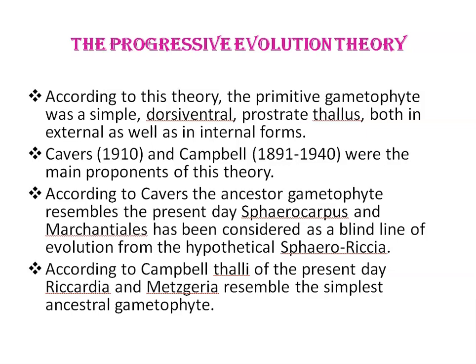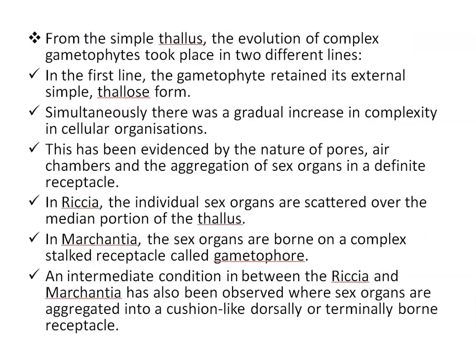According to Cavers, the ancestral gametophyte resembles the present-day Sphaerocarpus and Marchantia, and has been considered as a blind line of evolution from the hypothetical ancestor. According to Campbell, the present-day Riccia and Metzgeria resemble the simplest ancestral gametophyte. From the simple thallus, the evolution of complex gametophyte took place in two different lines. In the first line, the gametophyte retained its external simple thallus form as found in Marchantiales, and simultaneously there was a gradual increase in complexity in cellular organization, as evidenced by the nature of pores, air chambers, and the aggregation of sex organs in a definite receptacle.